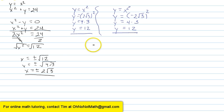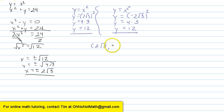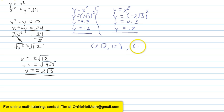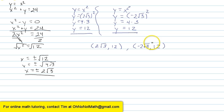So my solution is: the first point is x equals 2 times the square root of 3 and y equals 12. The second point is x equals negative 2 times the square root of 3 and y equals 12. That's my answer.